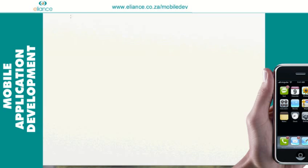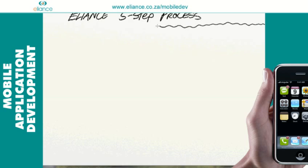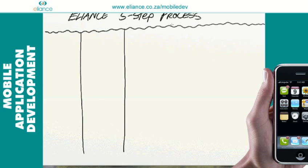In this video we're going to give you an overview of our five-step mobile application development process. Here at Alliance we develop code but we don't speak in code. We need to ensure that you understand the process we're going to follow to develop your application and what that means to your business. The purpose of this video is to clearly explain the proper steps to take from having a great idea to launching a profitable application.